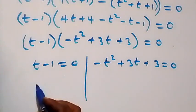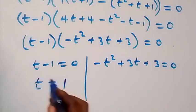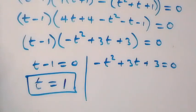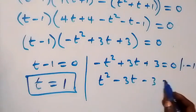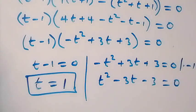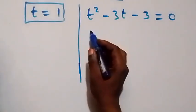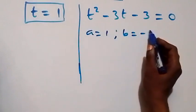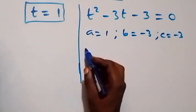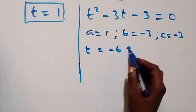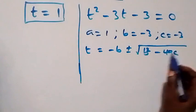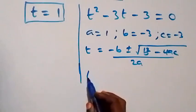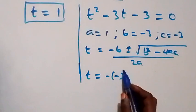From the first case, t equals 1. For the second case, multiplying through by minus 1 to remove the leading negative gives t squared minus 3t minus 3 equals 0. Comparing with the quadratic formula, a equals 1, b equals minus 3, and c equals minus 3. The formula gives t equals minus b plus or minus square root of b squared minus 4ac, all divided by 2a.